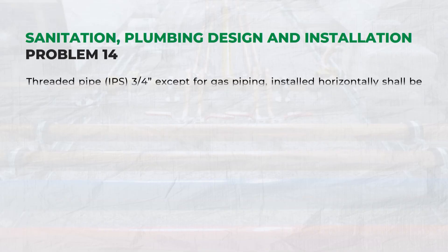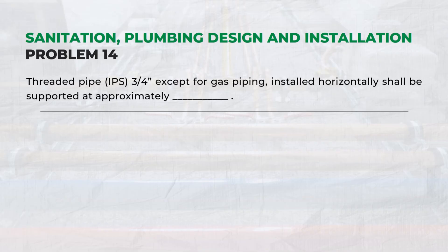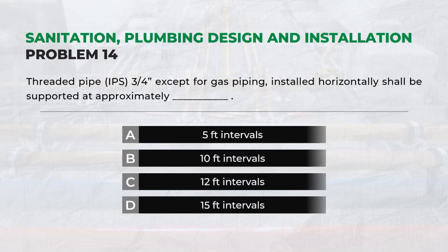Threaded pipe IPS 3/4 inch, except for gas piping, installed horizontally shall be supported at approximately: B. Ten feet intervals.